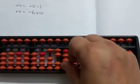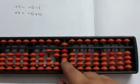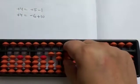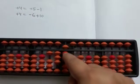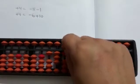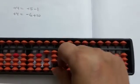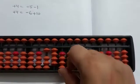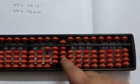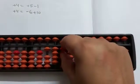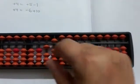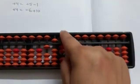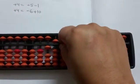Again plus 4 direct. Plus 5 minus 1, minus 6 plus 10, plus 5 minus 1, minus 6 plus 10. Plus 4 direct. Plus 5 minus 1, minus 6 plus 50 minus 40. Plus 5 minus 1, minus 6 plus 10.